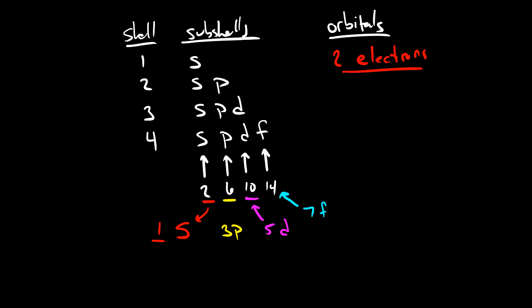There's only one S orbital, but we have three distinct P orbitals, five distinct D orbitals, and seven distinct F orbitals. Each of these orbitals in the P subshell are still part of that P subshell, but the electrons are positioned in different orbitals. Let's think about orbitals a little bit more so you can get a better grasp of exactly what they are.